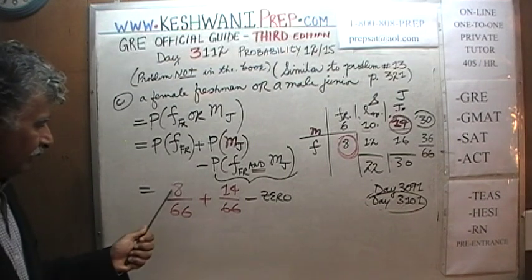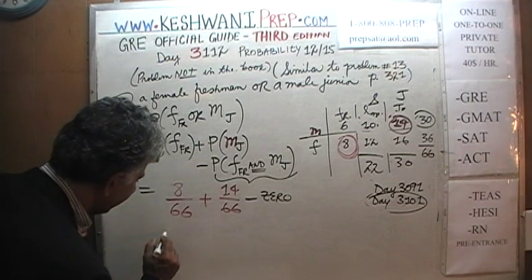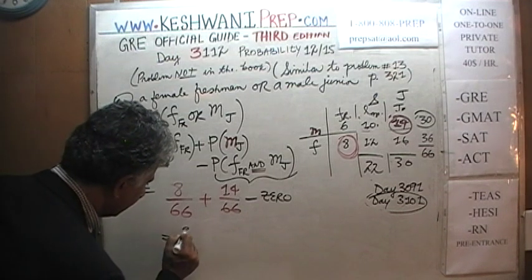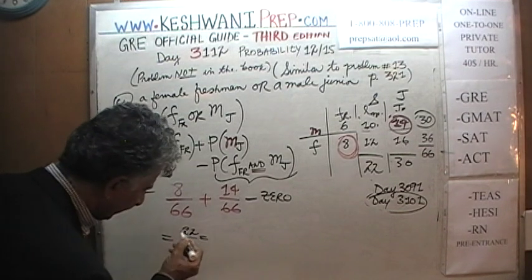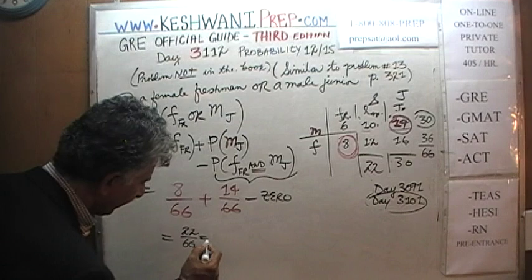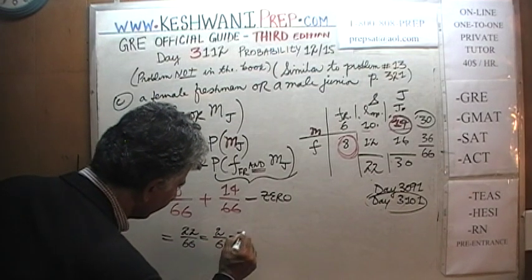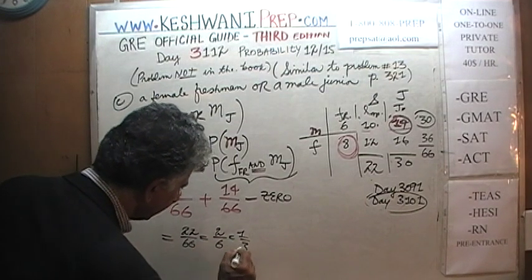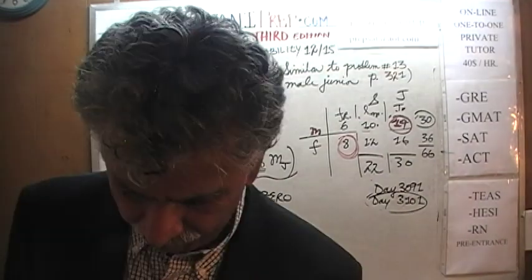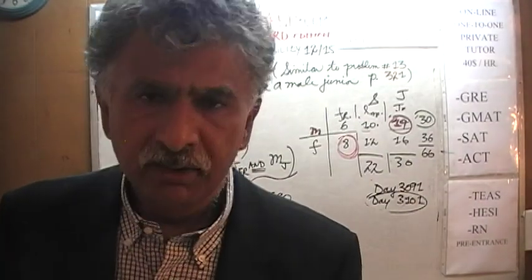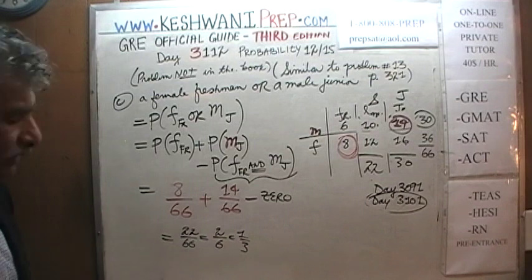Since the events are mutually exclusive, the quantity we subtract is zero. So: 8 + 14 = 22, giving us 22/66. Dividing top and bottom by 22: the answer is 1/3. Part C answer is one-third.